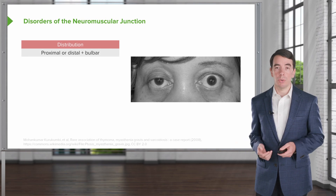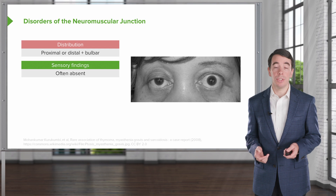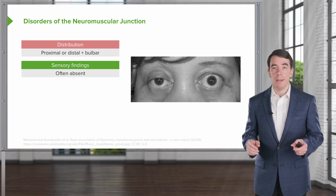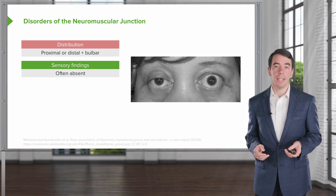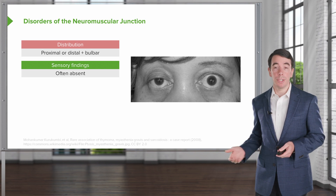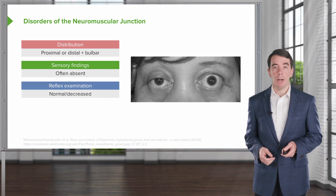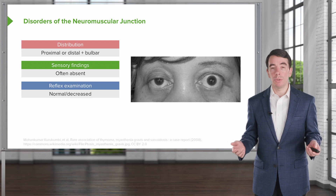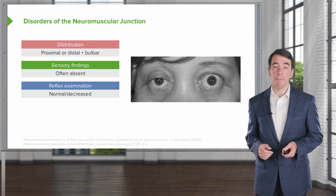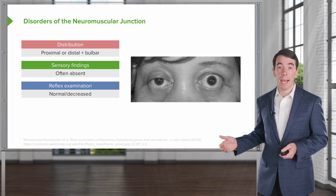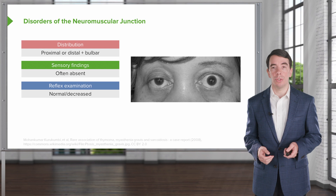For junctional disorders, we typically see that sensory findings are absent. Patients don't have paresthesias — no numbness, tingling, or those sorts of symptoms — and we don't find those on exam. Our reflex examination often reveals normal reflexes or slightly reduced reflexes. Importantly, we don't tend to see absent reflexes with most neuromuscular junction disorders.